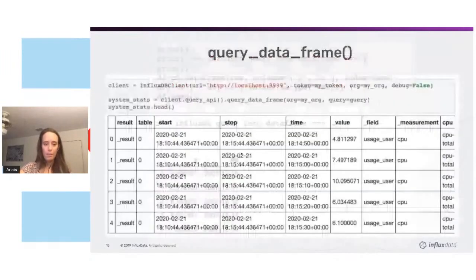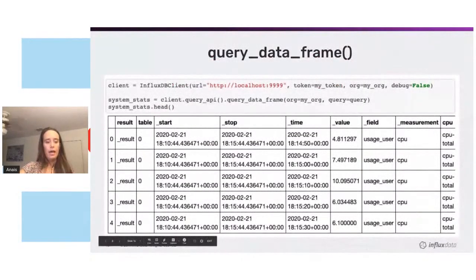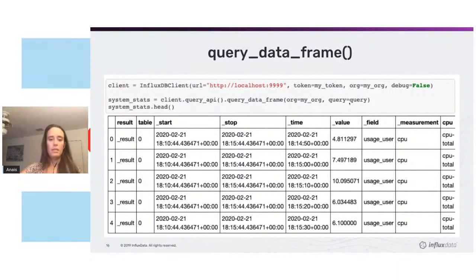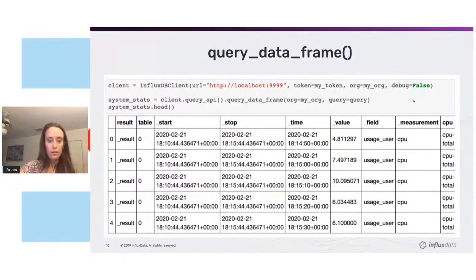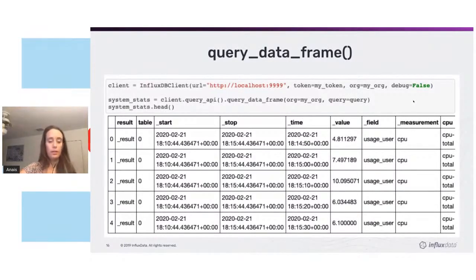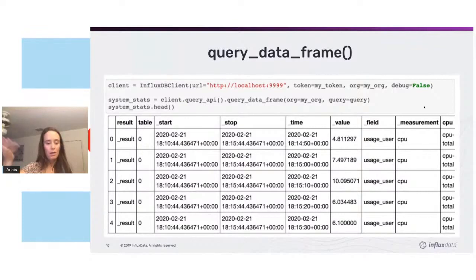The way I really recommend doing it is to use the query underscore data underscore frame method of the query API and return your data directly into a dataframe. You can then use the pandas dataframe head function to return the first five rows.